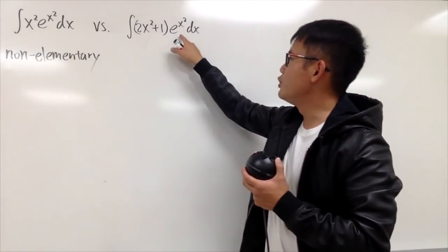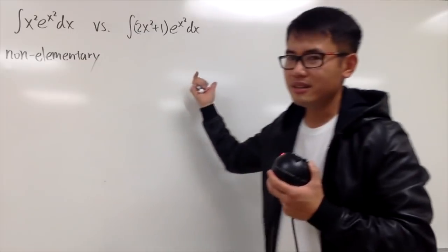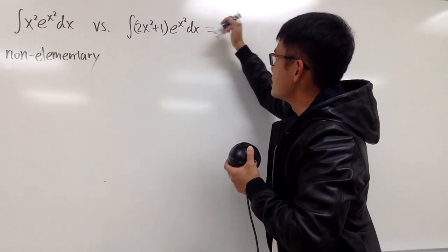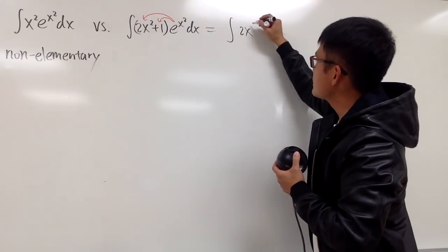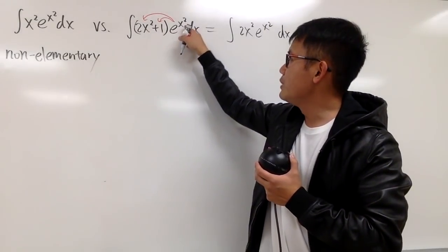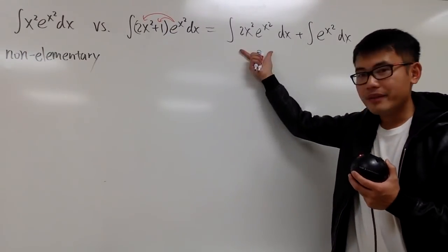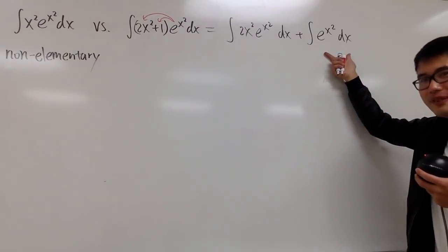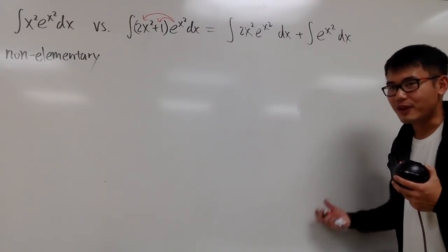You might be wondering: if you distribute this function part-wise, x squared times e to the x squared is not the same as the first part, right? So shouldn't this be non-elementary as well? Well, remember — sometimes when you do integrals, the more the better. The first step is to distribute into the parentheses. So we have the integral of 2x squared times e to the x squared, plus the integral of e to the x squared dx. The truth is, each one by itself is non-elementary — but together, when you add them up, nice things will happen. You end up with a really nice function for the final answer.